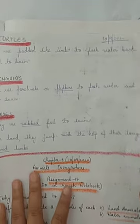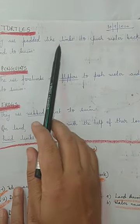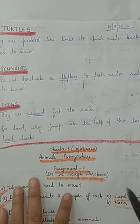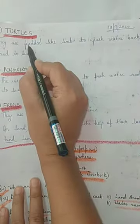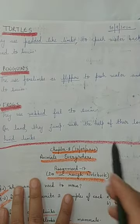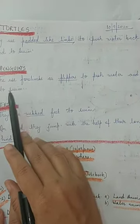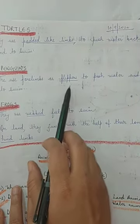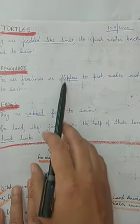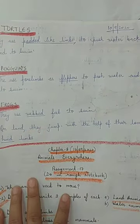Turtles use their padded-like limbs to push water back and to swim. Penguins use their four limbs as flippers to push water back and to move forward.